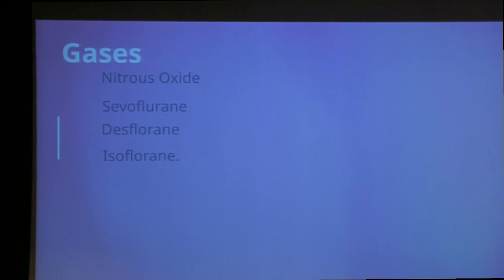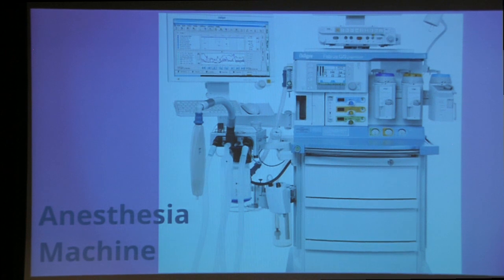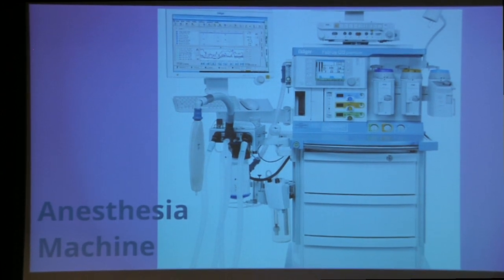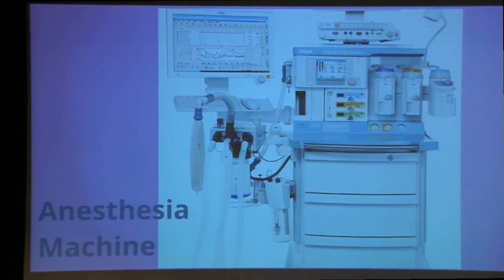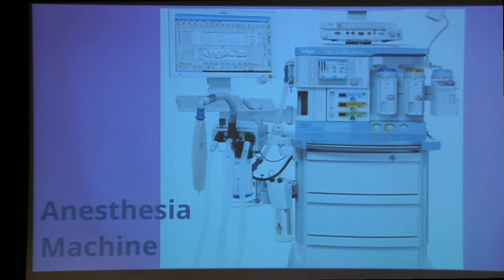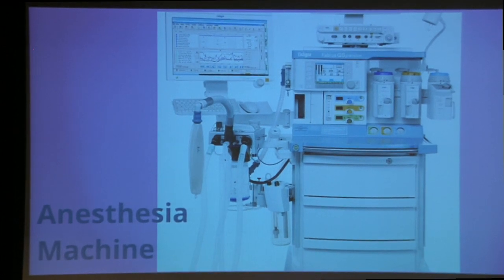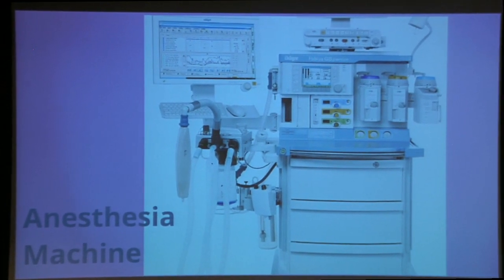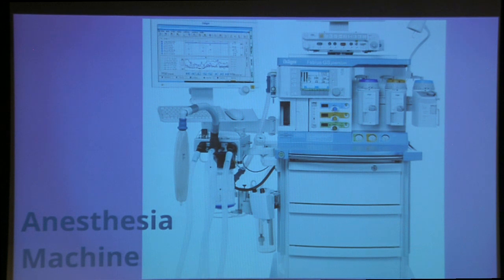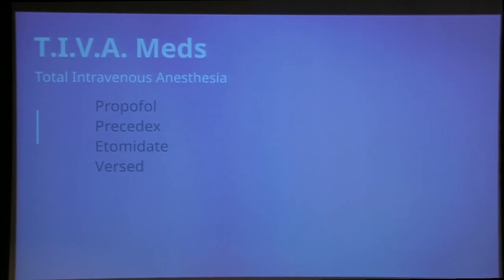This is what a typical anesthesia machine looks like — I did some shadowing with CRNAs and anesthesiologists. You can see the gases in the upper right-hand corner and the bellows used to manually ventilate, which hooks up to the breathing tube.